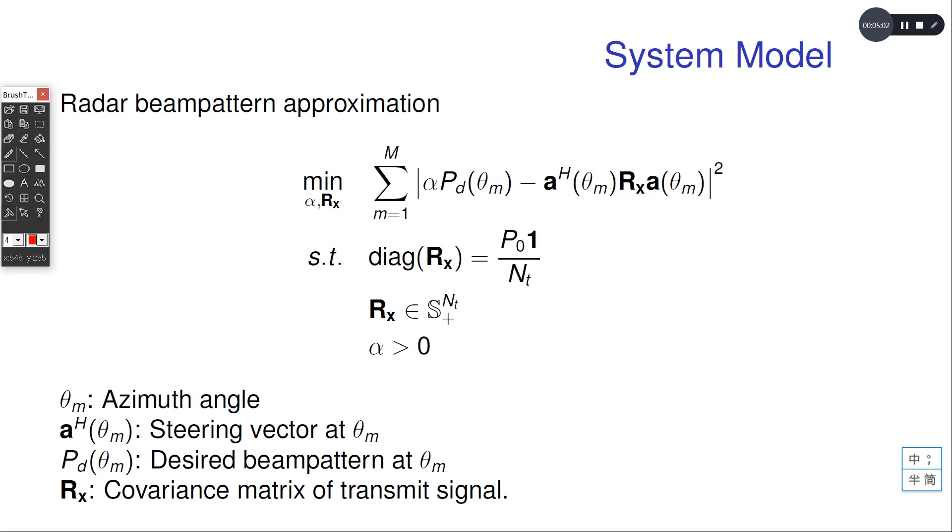The MIMO radar beam pattern design problem can be summarized typically as this. We can see the objective function is the beam pattern approximation square error.